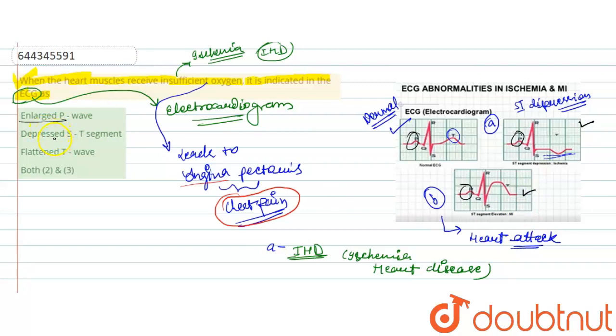If we see the ECG which indicates insufficient oxygen in our heart muscles, this will show the depressed ST segment and flattened T wave. That is why the correct answer will be option fourth, that is both two and three.